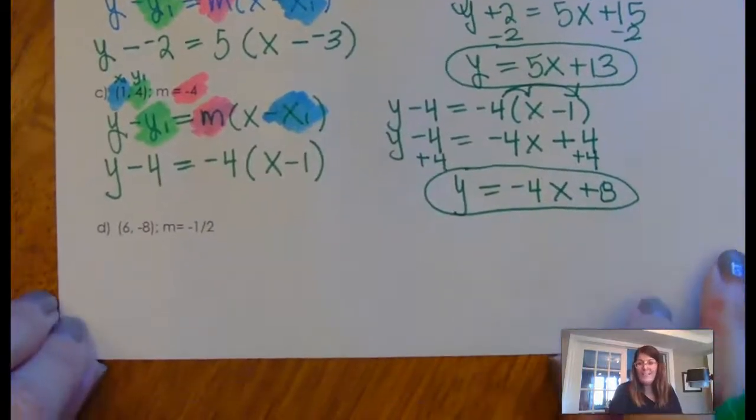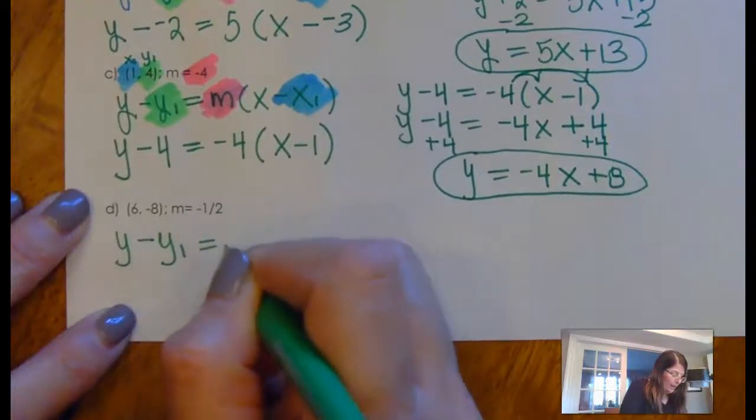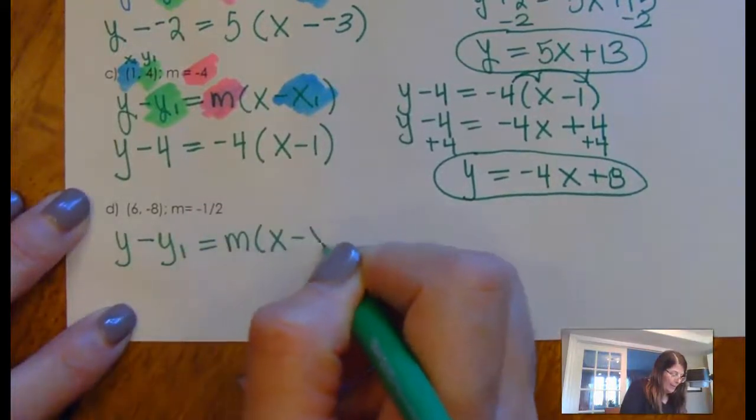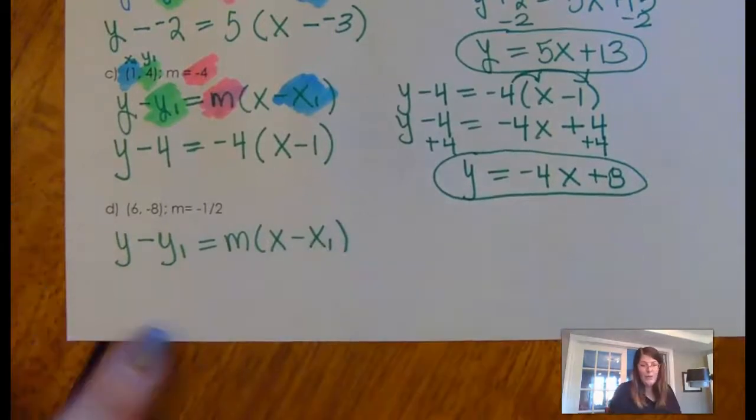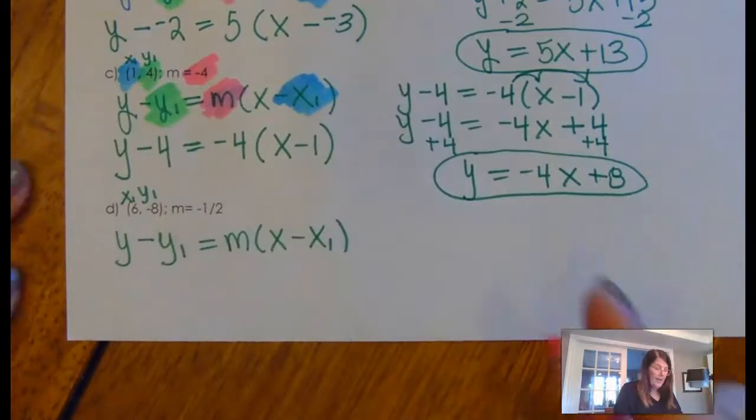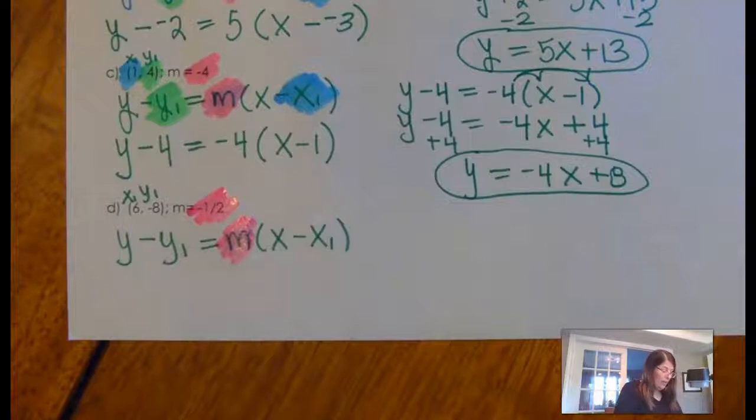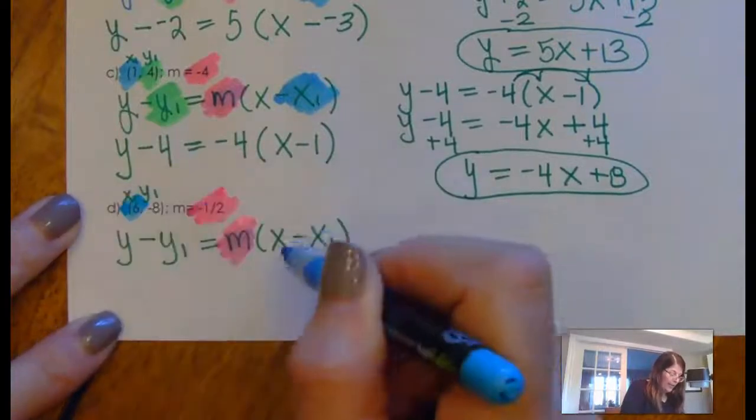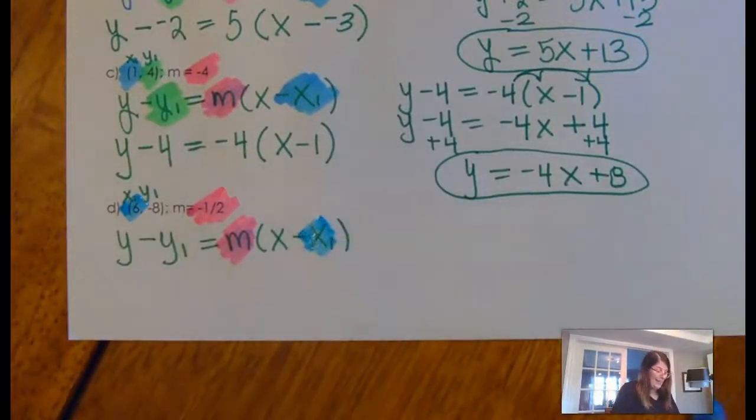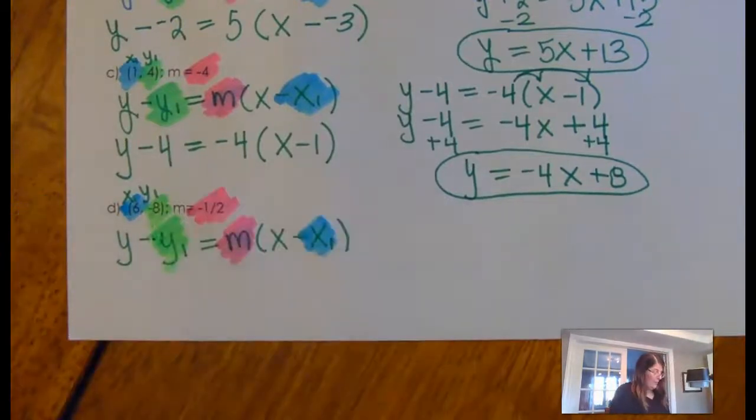Okay. Last example. This is not new. This is just another practice problem. So, Y minus Y1 is M times X minus X1. So, I start by writing out the formula. Then, I identify my X1 and my Y1. Now, I'm ready to plug this stuff in. So, I'm just color coding it all so it's super clear. Again, remember the X1 comes second in the formula. And the Y1 comes first. But when you look at ordered pairs, X comes before Y. So, try not to have that get you confused at all.